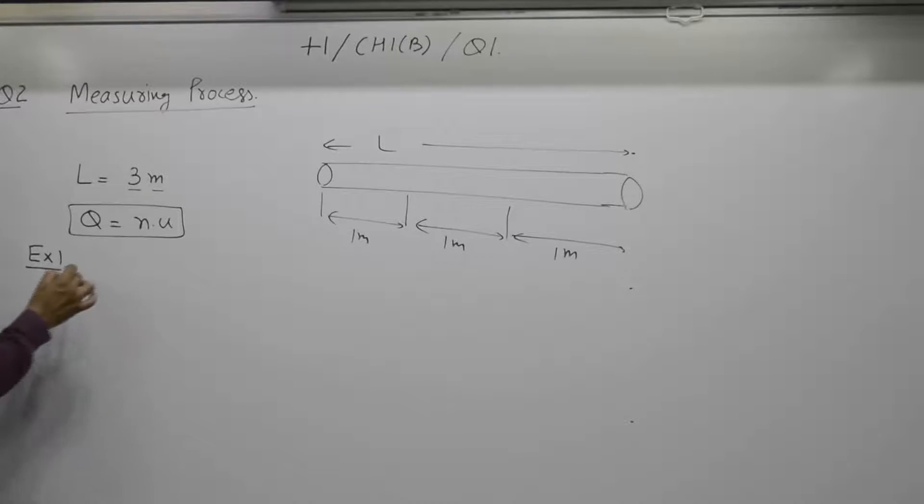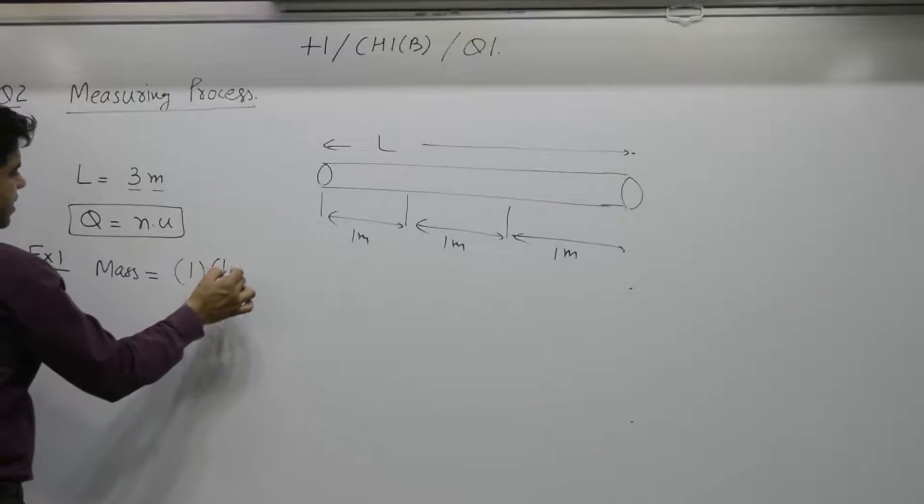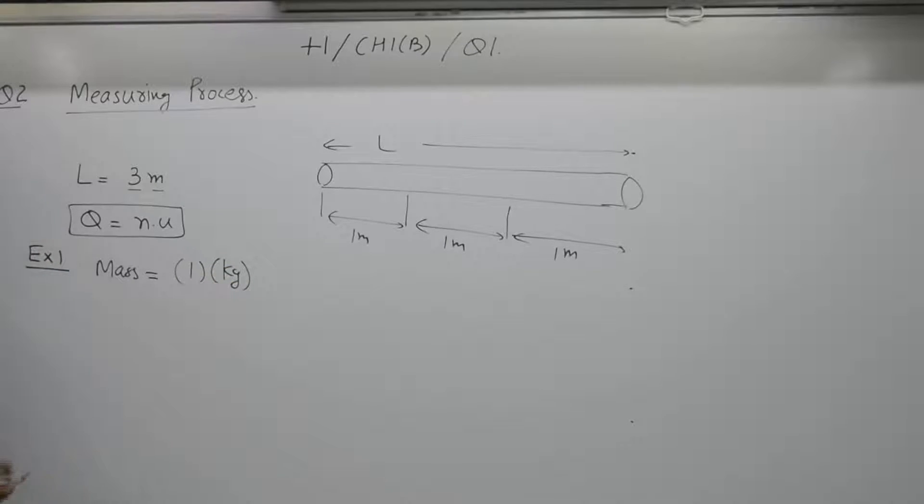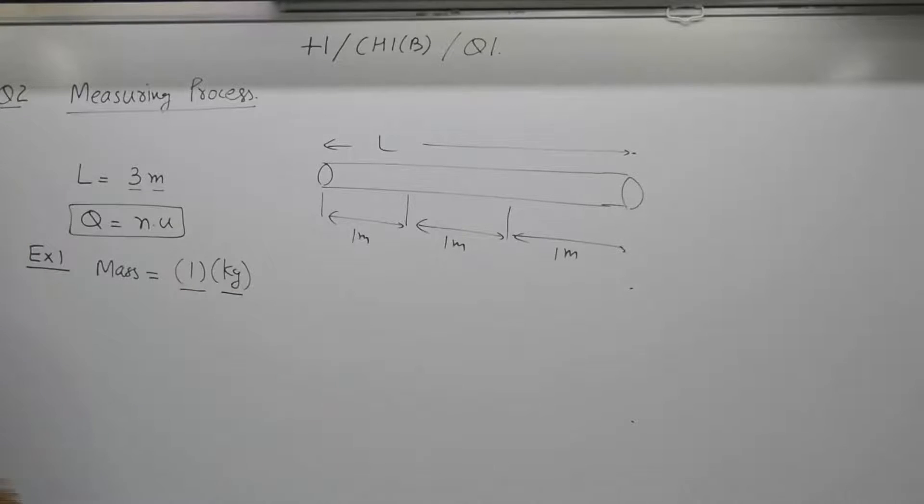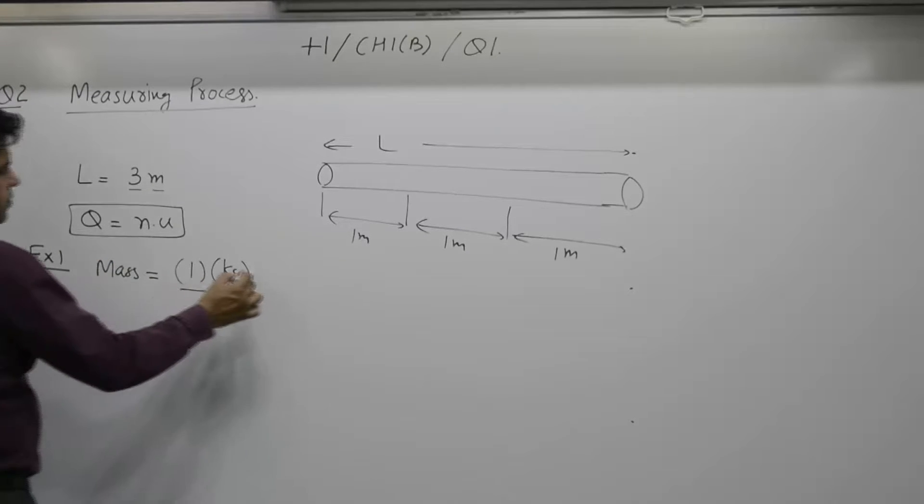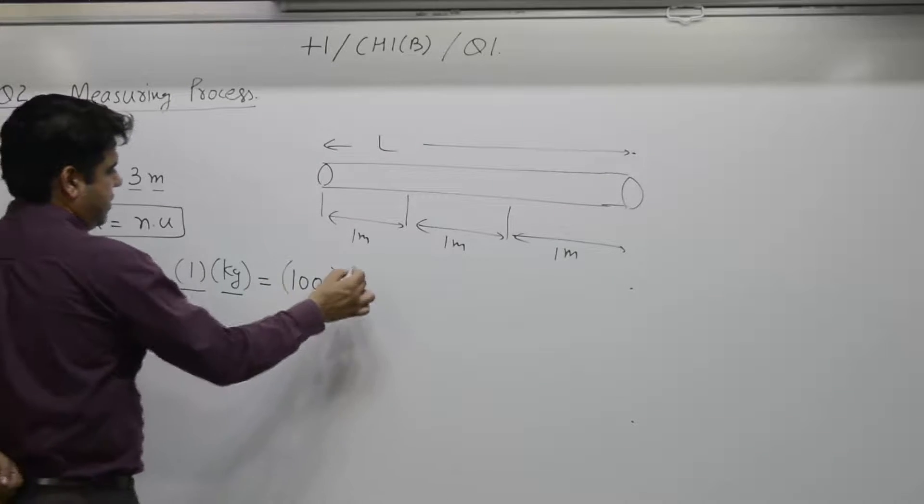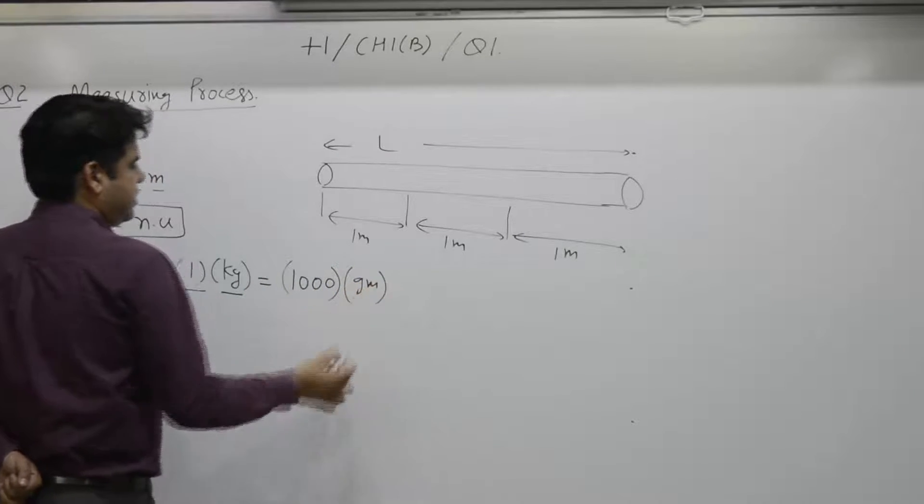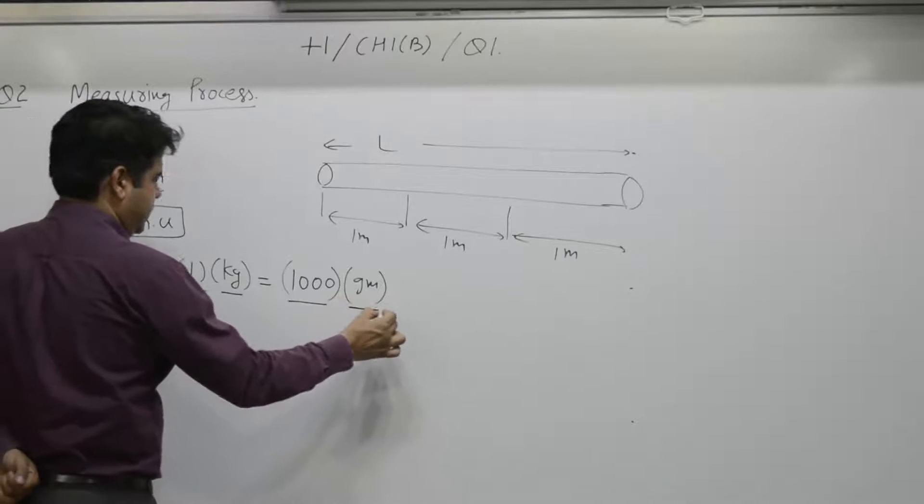When you say mass of an object is equal to 1 kg - 1 kg, yes - numerical value is 1, kg is unit. It is also equal to 1000 grams. This numerical value is 1000, gram is unit.